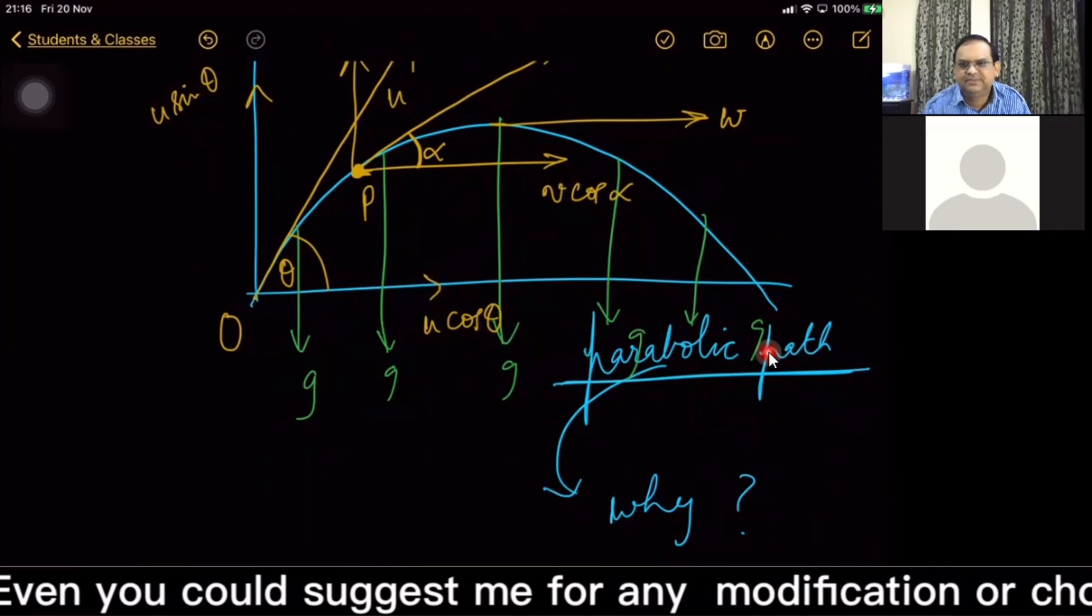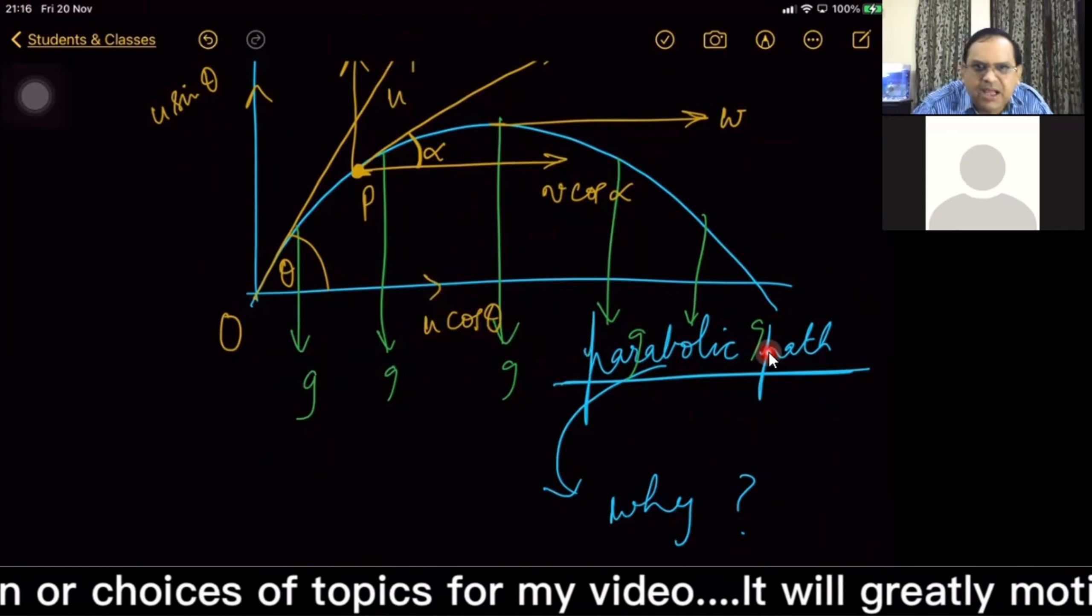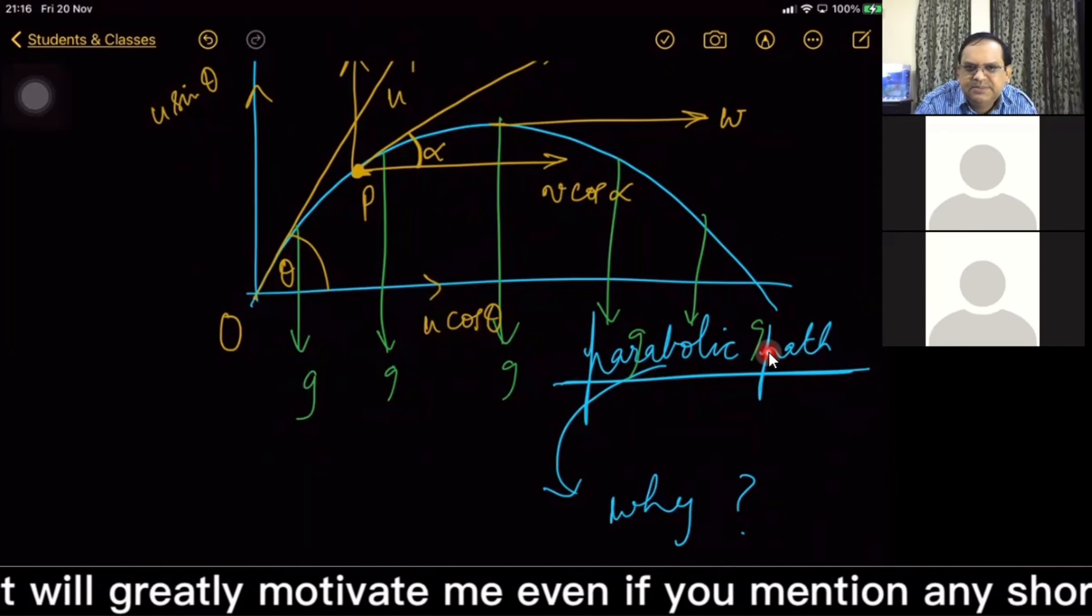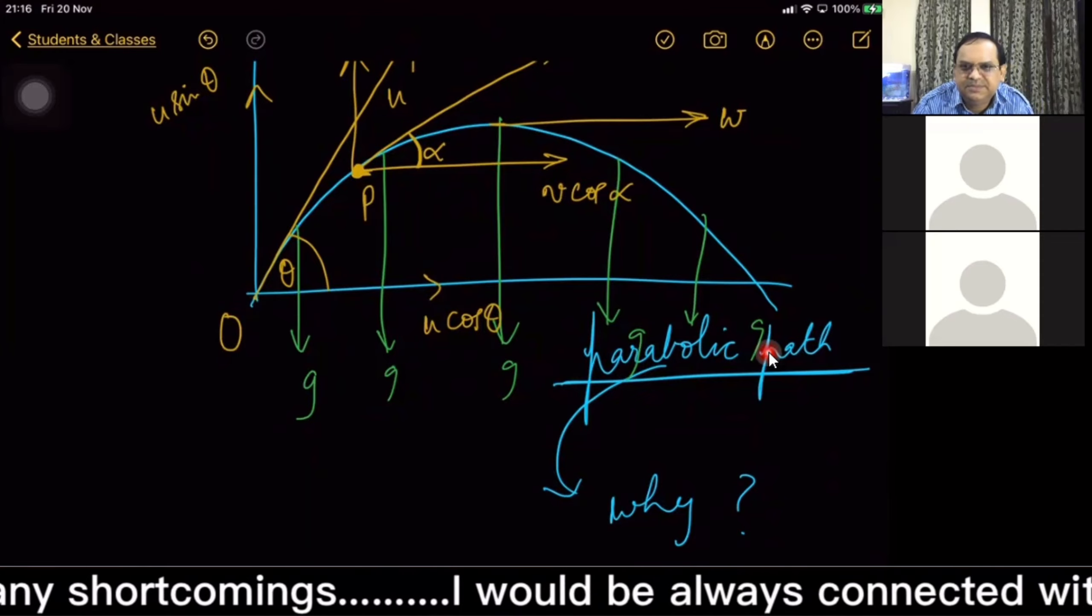Because the object is projected at an angle, it is moving with a velocity, but then acceleration is downwards, so it creates a parabolic path.